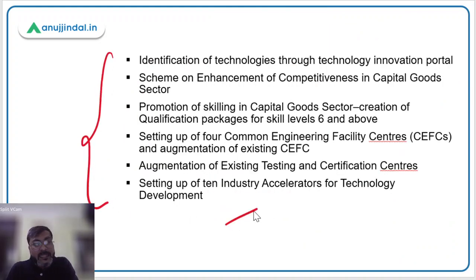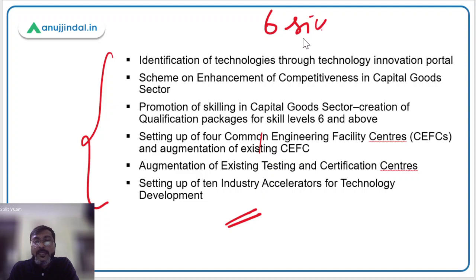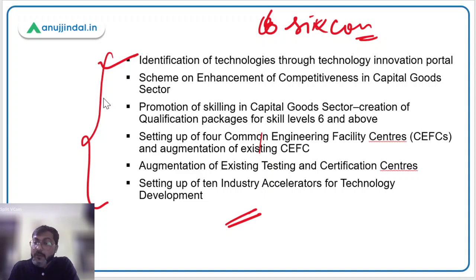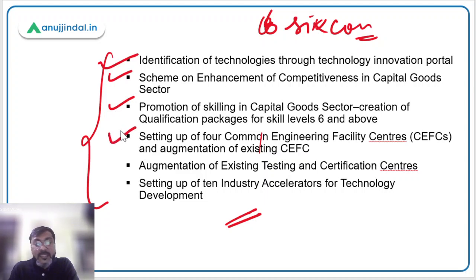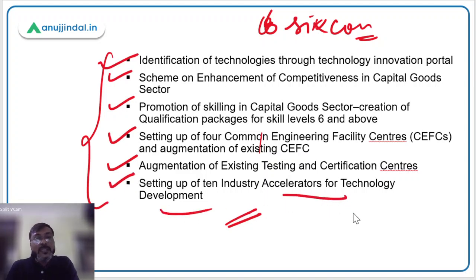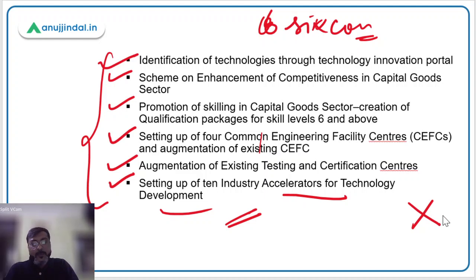There are six components under this particular scheme. You don't need to go into the details of these components, just remember there are six. They include: identification of technologies through a Technology Innovation Portal, promotion of skilling in the capital goods sector, creation of qualification packages for skills level 6 and above, setting up four Common Engineering Facility Centers and augmenting existing ones, augmentation of existing testing and certification centers, and setting up 10 industry accelerators for technology development.